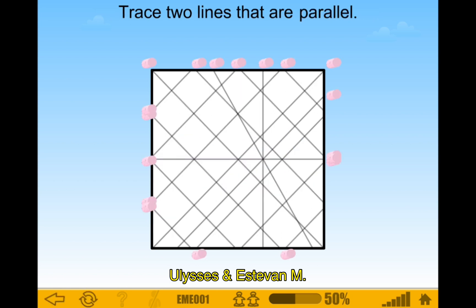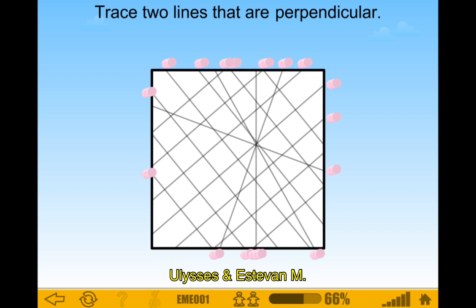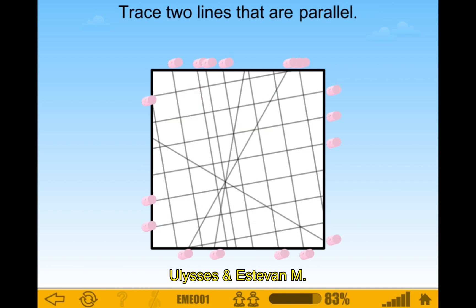Parallel — we could just use regular ones. I'm gonna use this one and this one. There you go. Parallel. That looks cool. This is really cool. Perpendicular — okay, so I found it. There we go. That's simple. Perpendicular. Parallel — I'm gonna make this one and this one. And that's the last level.